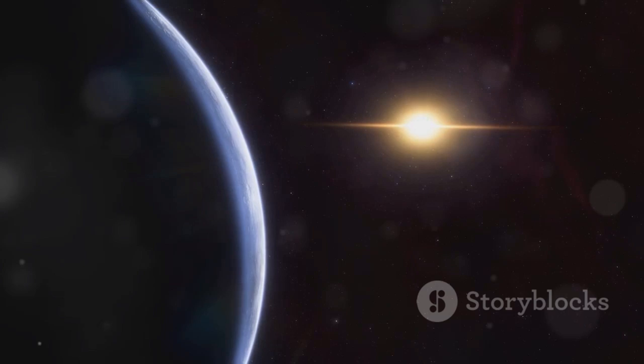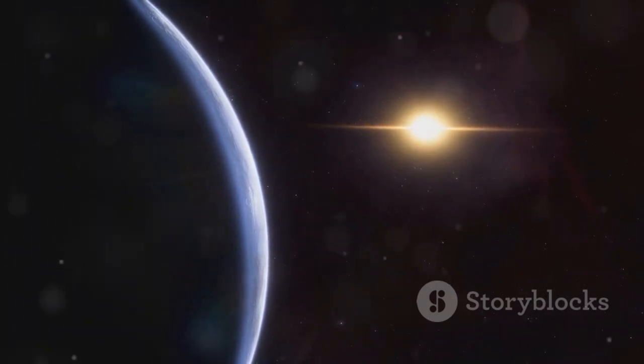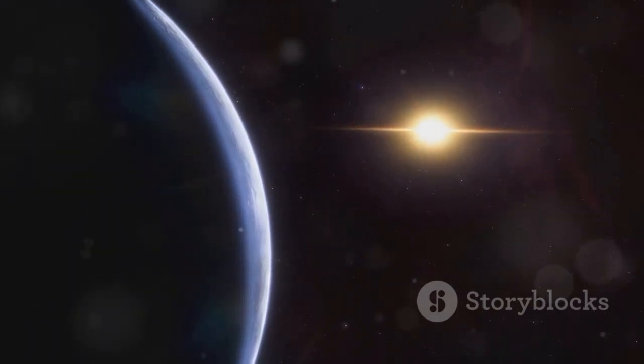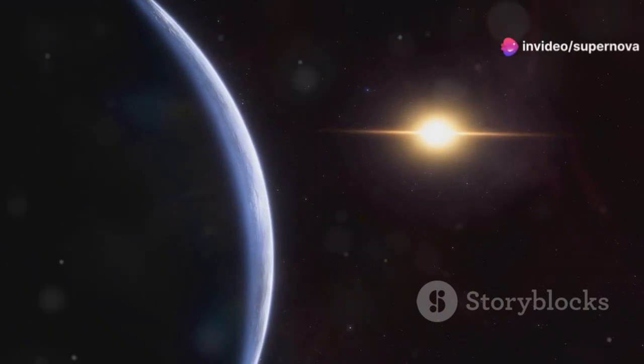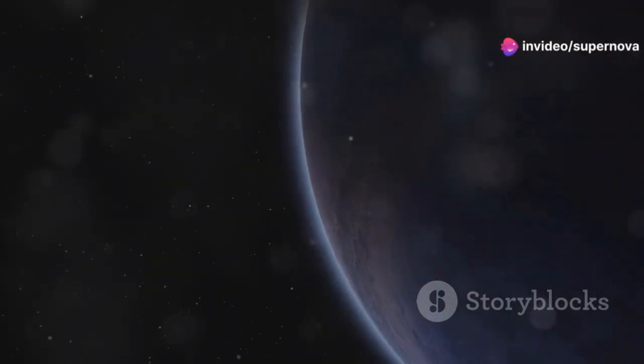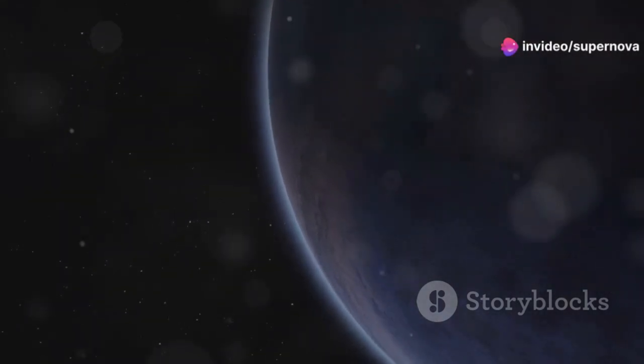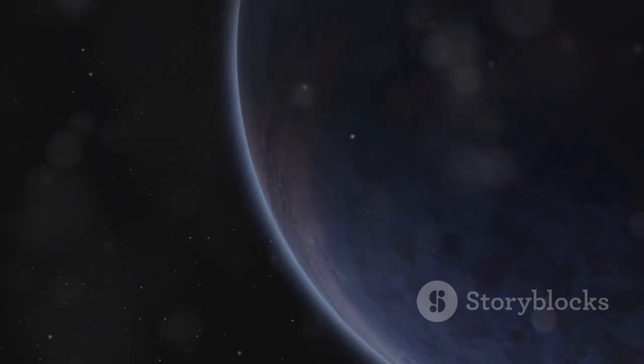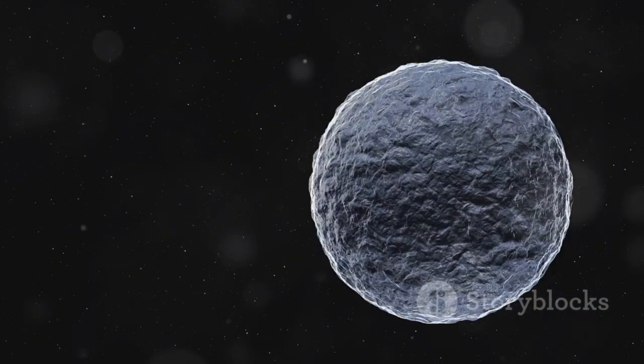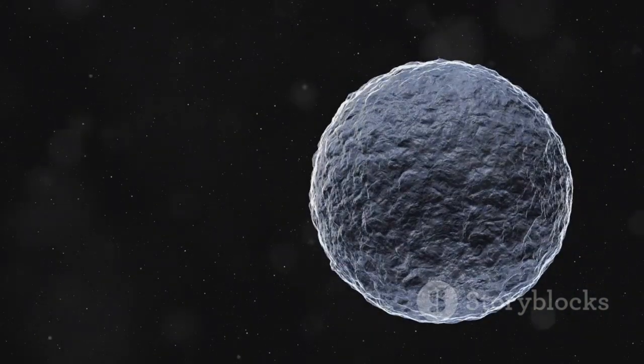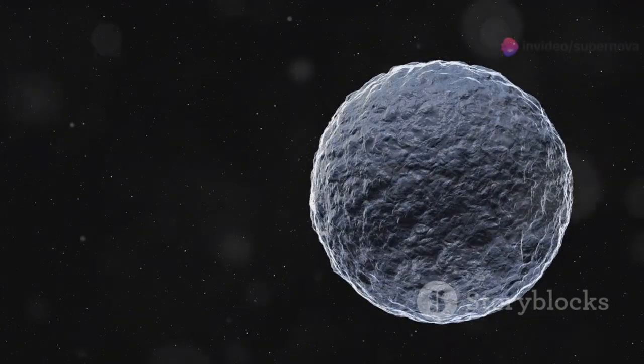Proxima b resides in the habitable zone of its star, a region where conditions might be just right for life as we know it. The habitable zone is often referred to as the Goldilocks zone, where temperatures are neither too hot nor too cold, allowing for the potential presence of liquid water. This means that temperatures on Proxima b are just right for liquid water to exist on its surface.